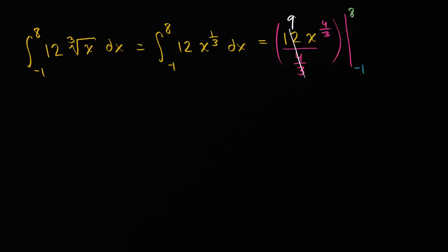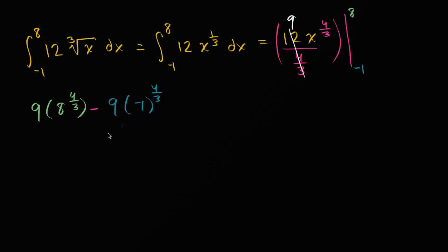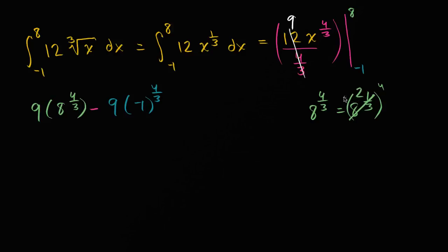Evaluating at eight, this gives us 9 times 8 to the 4/3 power. What is 8 to the 4/3? That equals 8 to the 1/3, raised to the fourth power. The cube root of 8 is 2, because 2 to the third power is 8. And 2 to the fourth power is 16. So 8 to the 4/3 is 16.